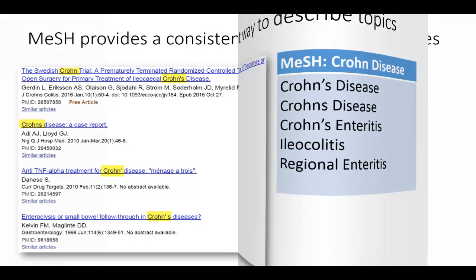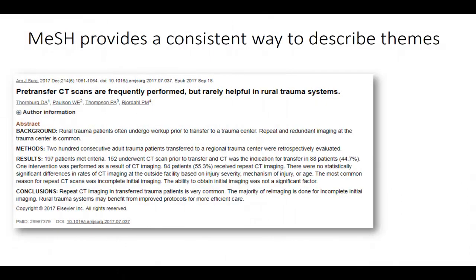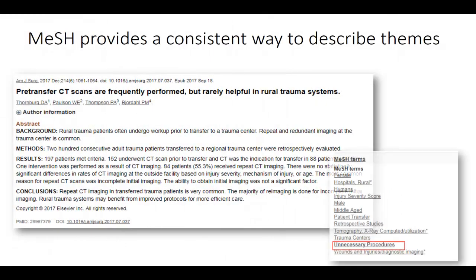Also, certain themes may be expressed in an article that may be hard to describe with keyword searching. For instance, an author may write an article that contains a theme of unnecessary procedures without having used these words in the article. Tagging an article with the MeSH heading Unnecessary Procedures lets us search on this theme.